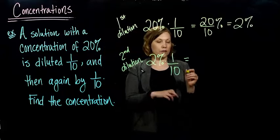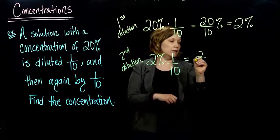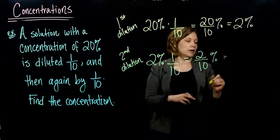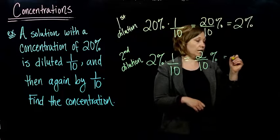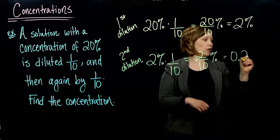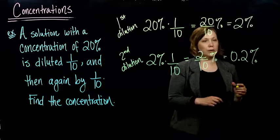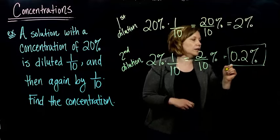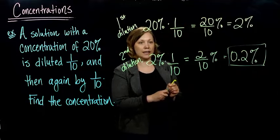All right. So 2 over 10 percent, which we can write as a decimal, 0.2%. And there we have it. That is our concentration after our second dilution.